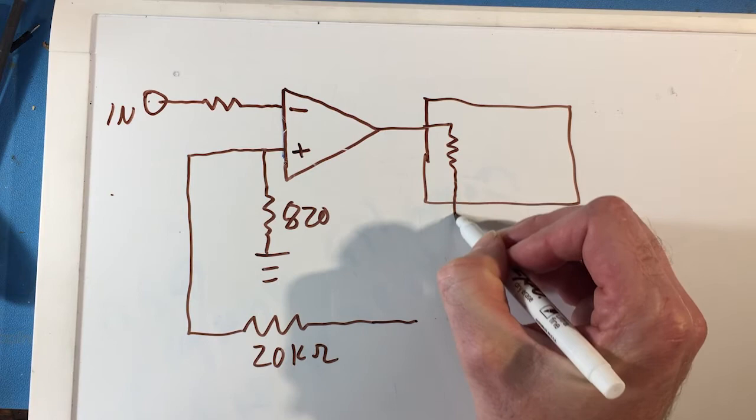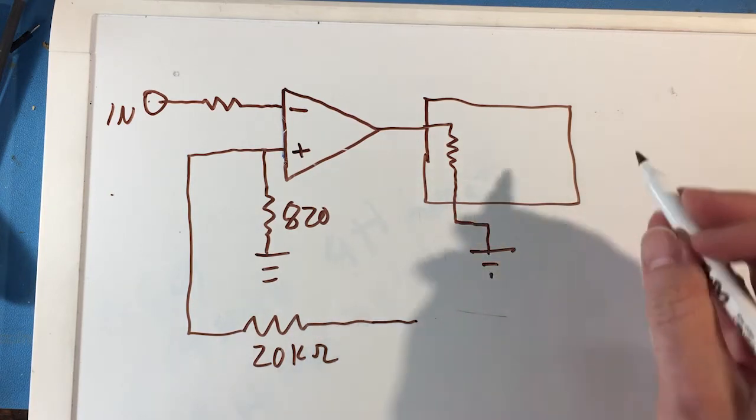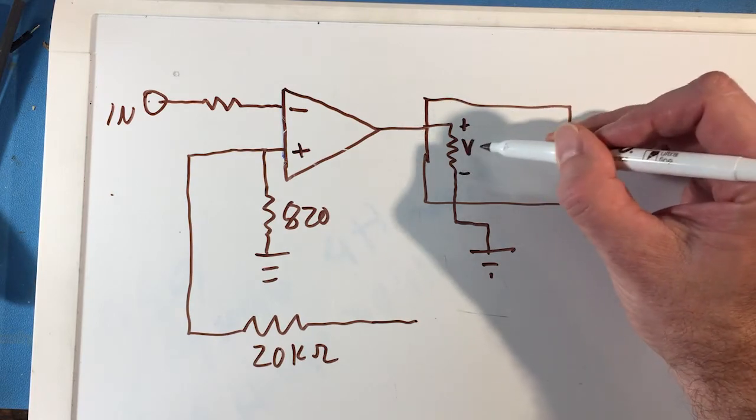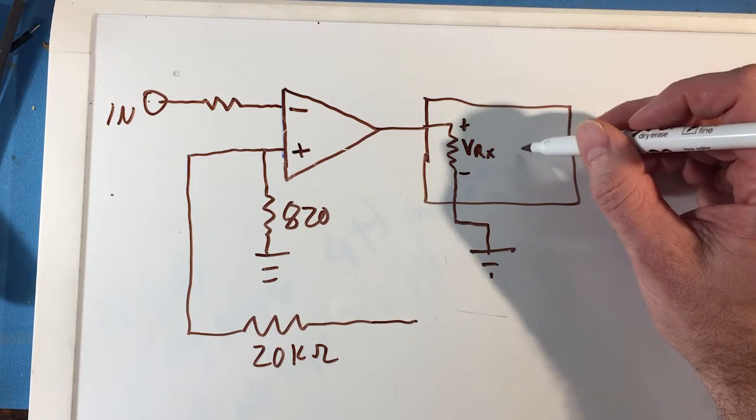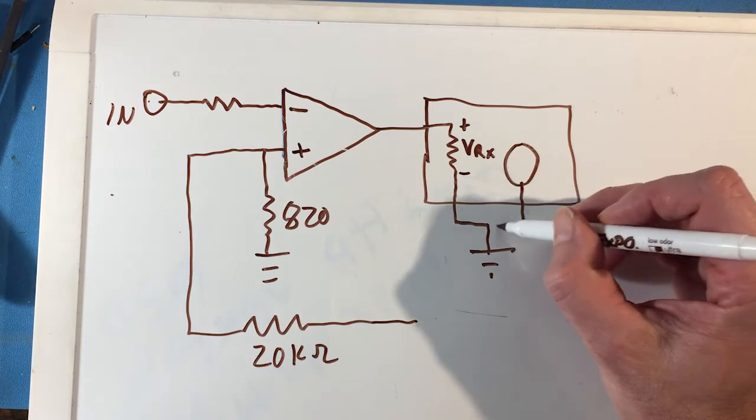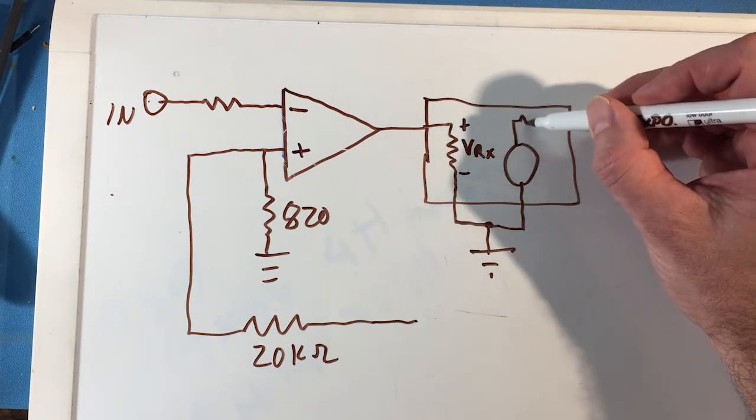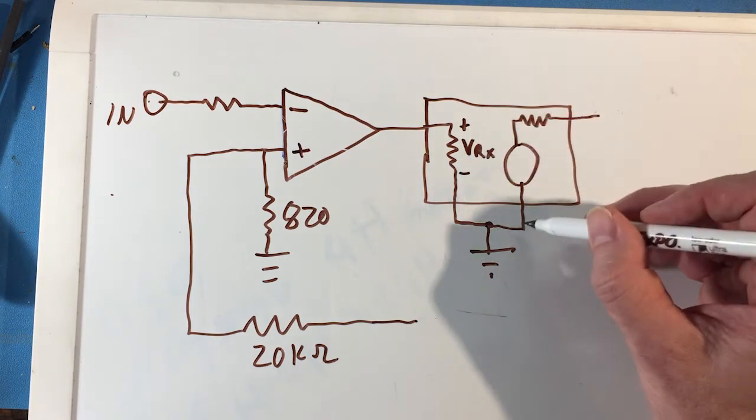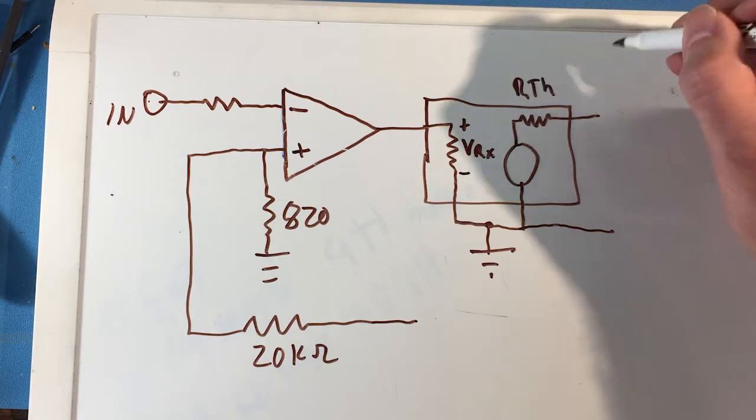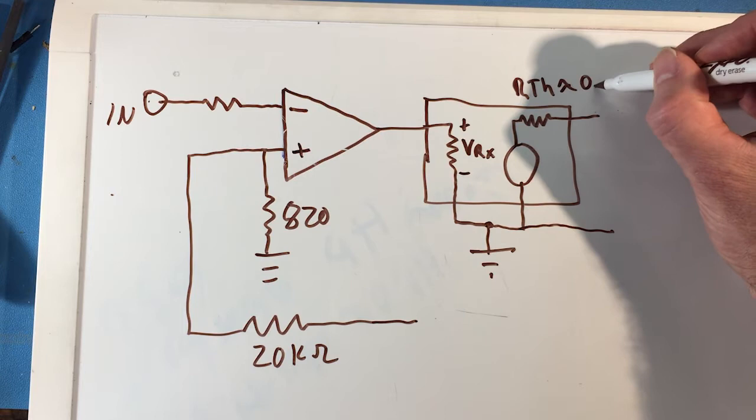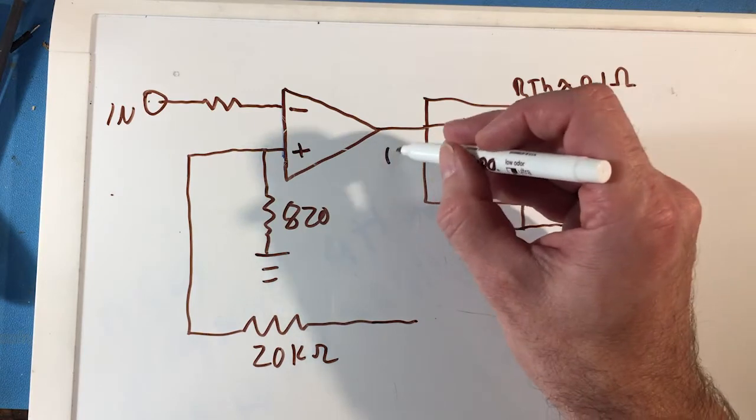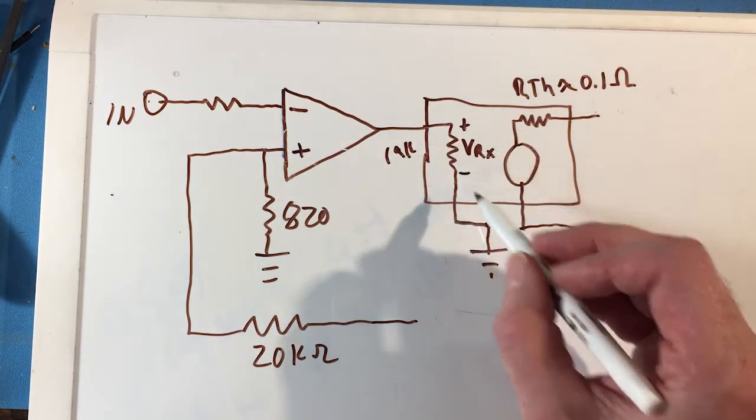And we're going to have a resistor there that goes to ground inside the box and we want to put the sign on it. We'll call that VRX and on the other side a dependent voltage source. I think I'm drawing the wrong symbol for that but it is a dependent voltage source. And then in the output, so this resistor here is RTH of the circuit. We're going to say that's approximately 0.1 ohms. And this one right here we'll call 19 kiloohms. It's this resistor right here.